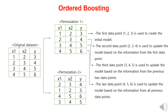CatBoost creates multiple permutations of the dataset for training. For example, with two permutations, the first permutation consists of data points [1,2,3], [2,3,4], [3,4,5], and [4,5,6]. The first data point is used to create the initial model; the second updates the model using the first point's information; the third updates using the previous two points; and so on. The second permutation is trained the same way, and then results from all permutations are combined to build the final model.